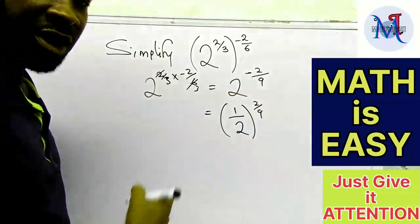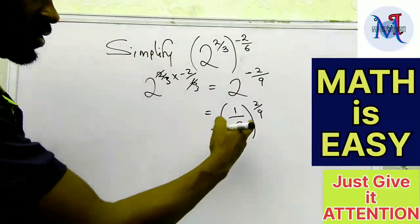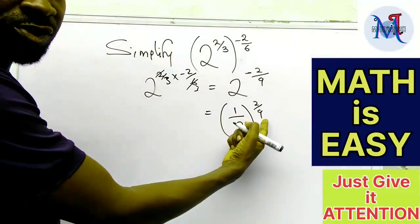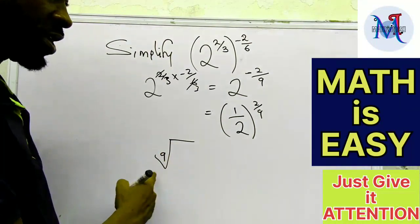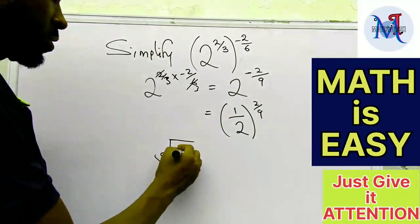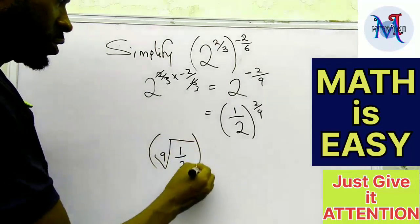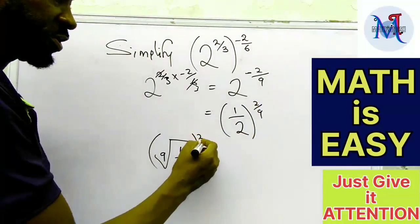Okay, so now I'm going to apply the functional law of indices, which means this denominator 9 becomes the root. So I'm going to have the 9th root of 1 over 2. This numerator becomes the power.